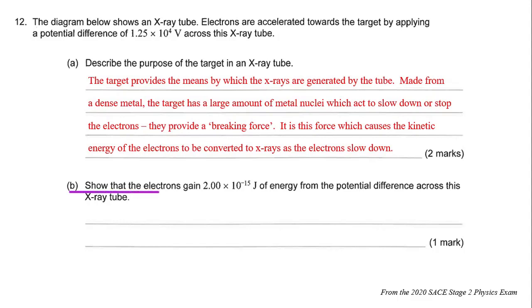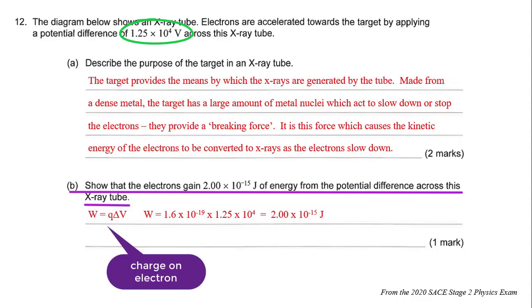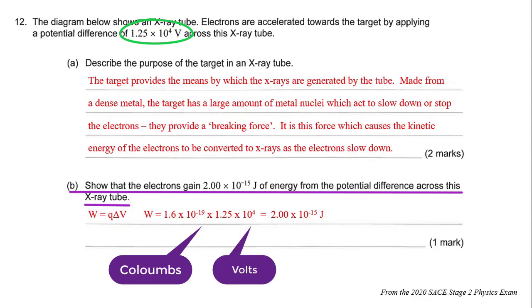Show that the electrons gain 2 × 10^-15 joules of energy from the potential difference across the X-ray tube. Knowing that we've got 1.25 × 10^4 volts, you're going to use W = q∆V. Q being the charge on an electron, so 1.6 × 10^-19 coulombs by 1.25 × 10^4 volts gives you 2 × 10^-15 joules.